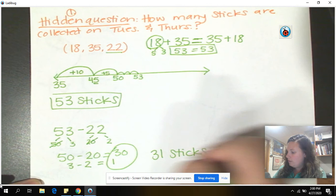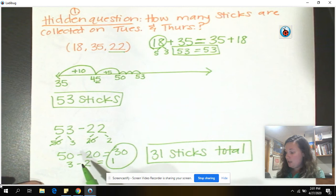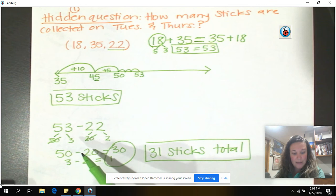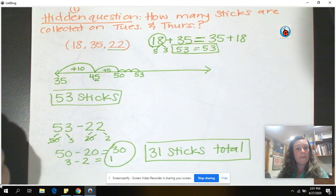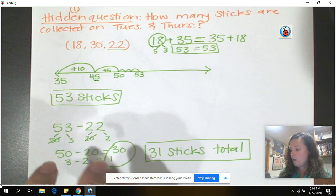Look at that. So we use the number line to add. And then we just decomposed to subtract. We decomposed by place value, didn't we? These are two strategies you can use. You can absolutely choose to do different strategies when you get your number set. So remember, you have to answer that hidden question first before you answer the question that's being asked of you. Because then it gives you the number you're going to be subtracting from. All right. So good luck, mathematicians. And I look forward to seeing your work.